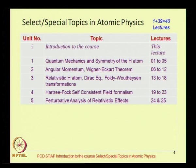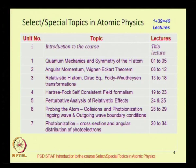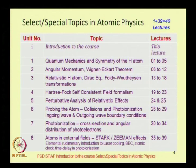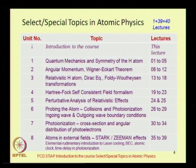In Unit 5, we will talk about perturbative analysis of relativistic effects. In Unit 6, we will study how an atom is probed — using either collisions or photo ionization. In Unit 7, we will discuss photo ionization in further detail using boundary conditions developed in Unit 6, since photo ionization requires a different set of boundary conditions from collisions. Finally, in Unit 8, we will study atoms in external fields, covering the Stark effect, the Zeeman effect, and a rudimentary introduction to laser cooling, Bose-Einstein condensation, atomic clocks, and attosecond metrology.